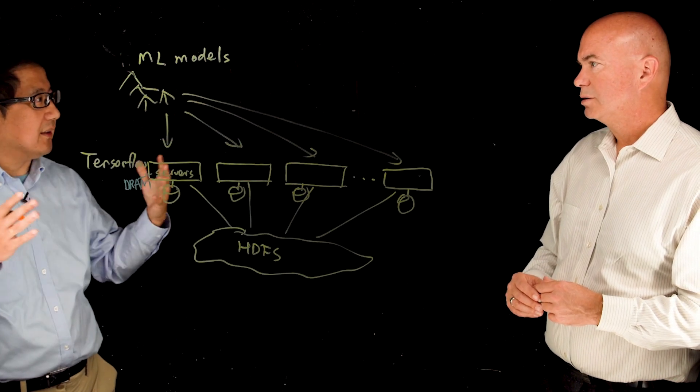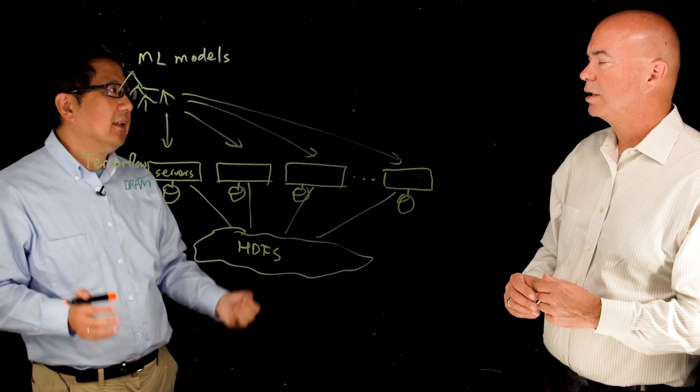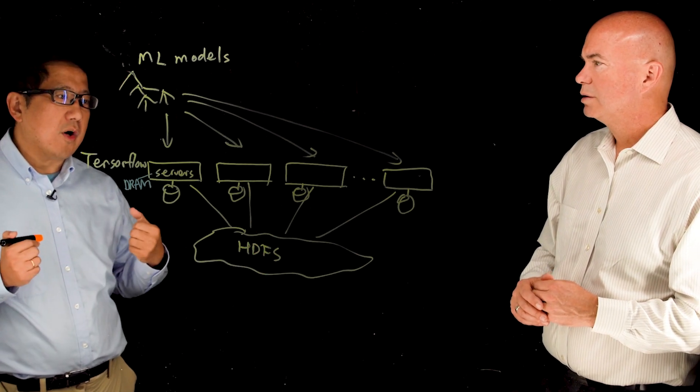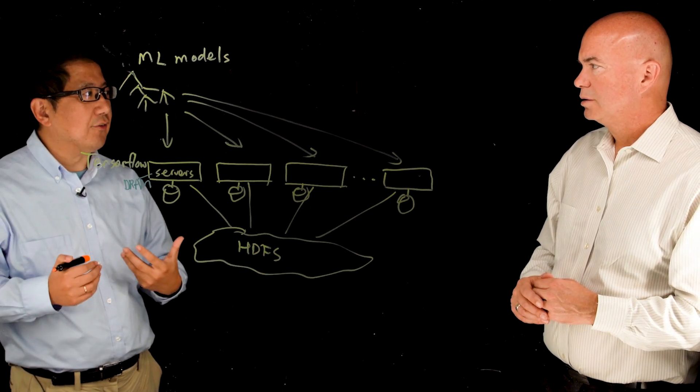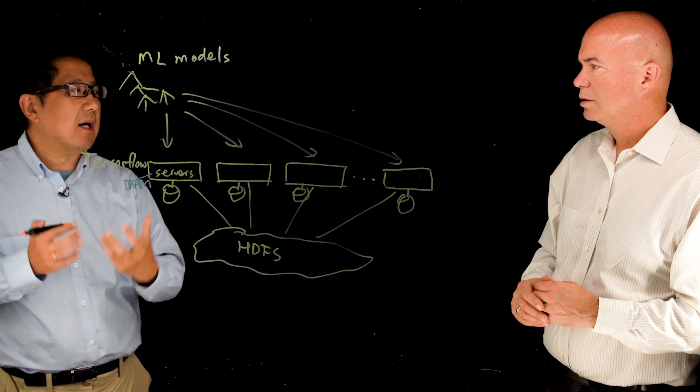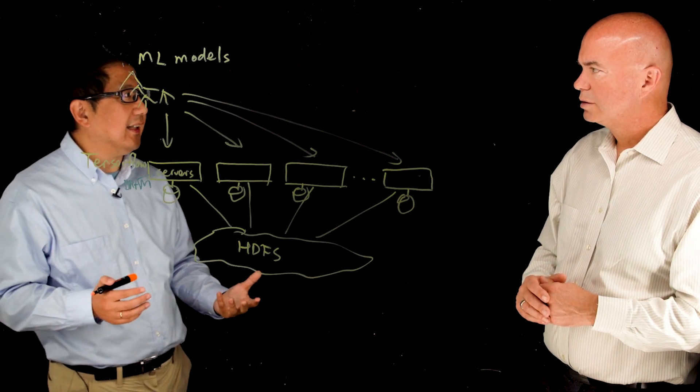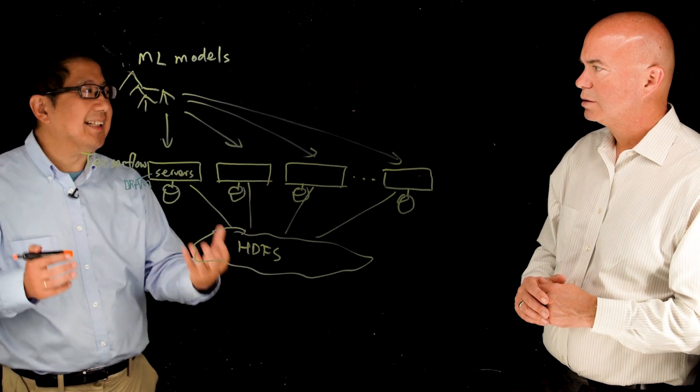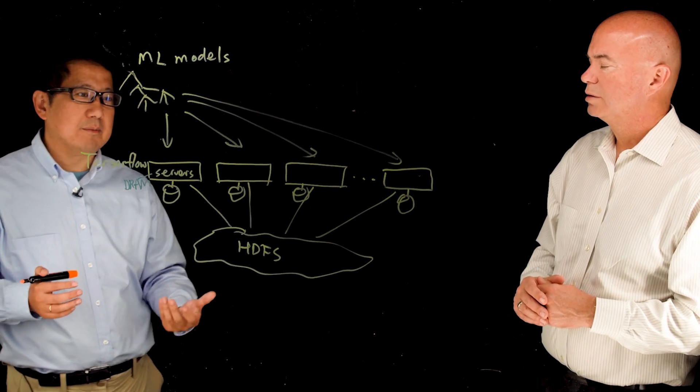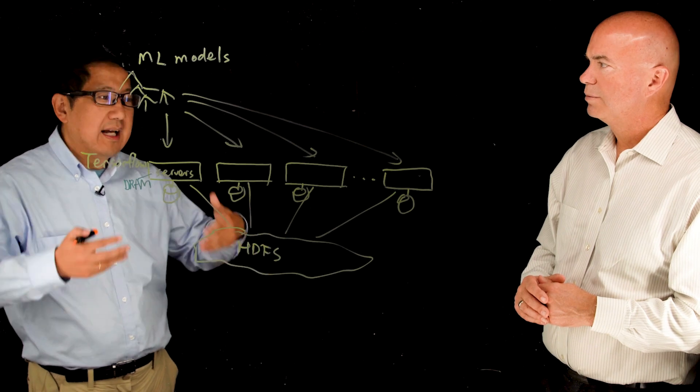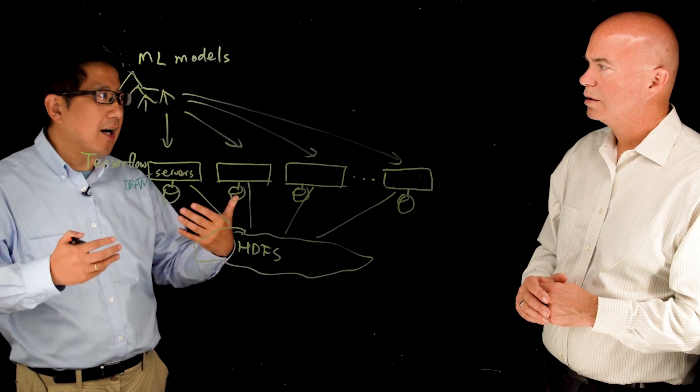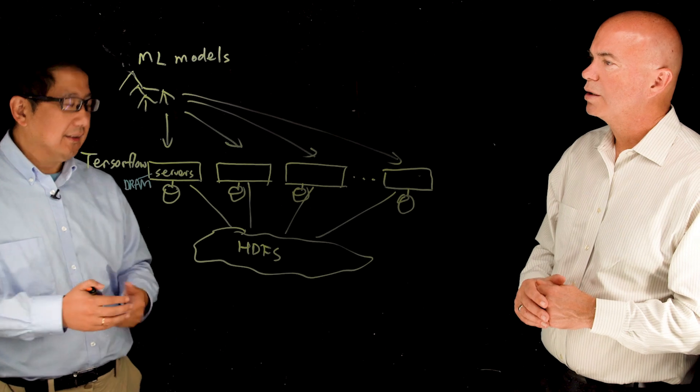For different machine learning problems there are different size of machine learning models. And Optane as well as our software is particularly useful when the model is large. So those situations you have a higher data density or more data intensive machine learning training where the bottleneck is more in the size of memory and in the amount of IO. And that's where Optane and our solution come in to accelerate.